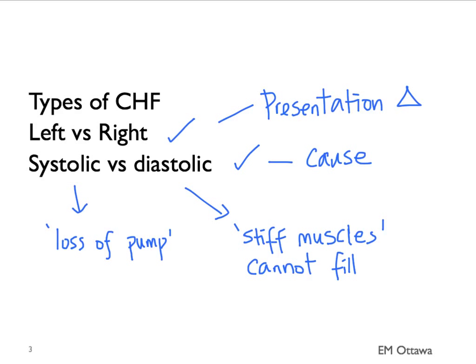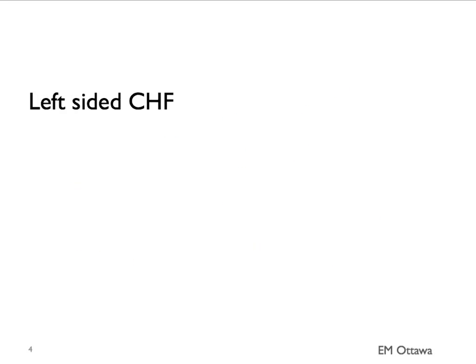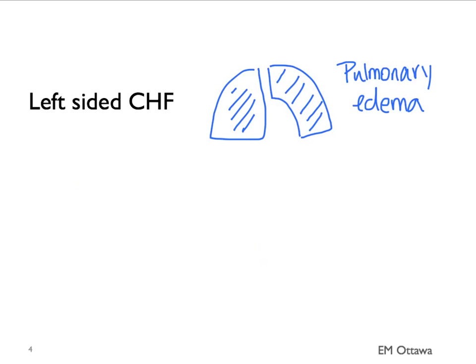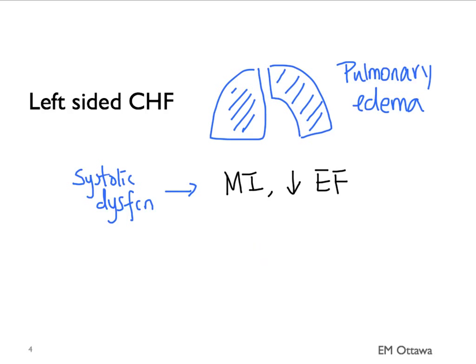In diastolic heart failure, the heart is slow to fill. Left-sided congestive heart failure presents as cardiogenic pulmonary edema. The most common reason is from systolic dysfunction. It mostly stems from decreased ejection fraction from previous ischemic heart disease. It can also happen from dilated cardiomyopathy.